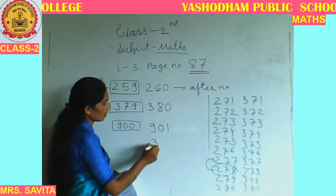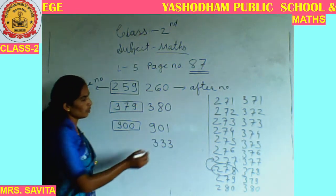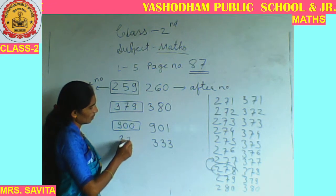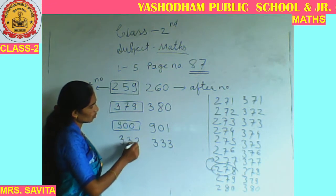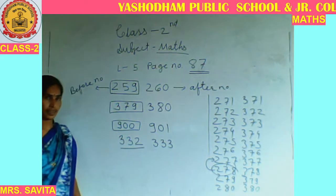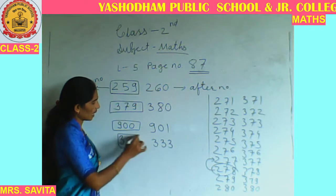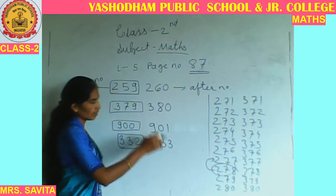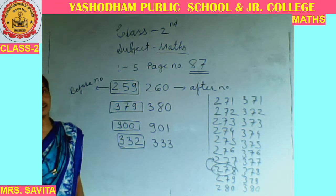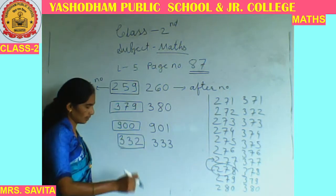Next number: 333. What comes before 333? 332. So 332 is the before number of 333. Let's count to verify: 332, 333, 334, 335 — like this. We are getting the correct answer.